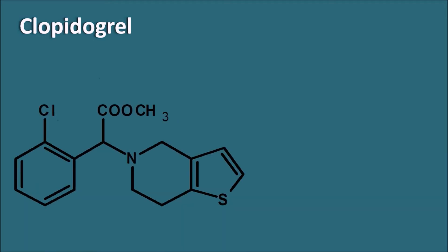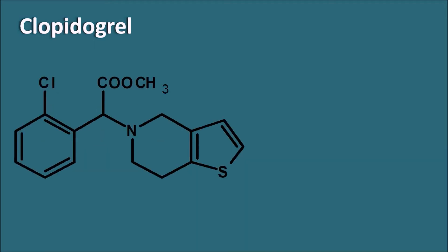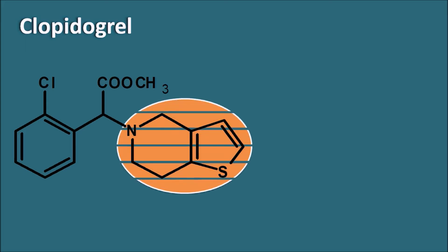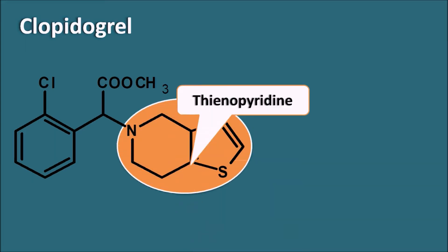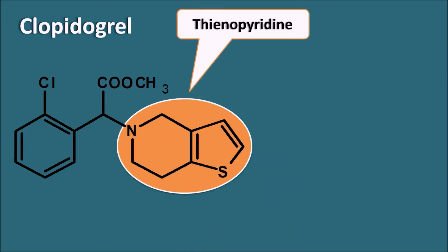Let us see the clopidogrel structure. This is the structure of clopidogrel, and we can observe a heterocyclic ring system — a six-membered ring system attached with a five-membered ring system. This ring system is the thienopyridine, which is why clopidogrel is called a thienopyridine derivative.